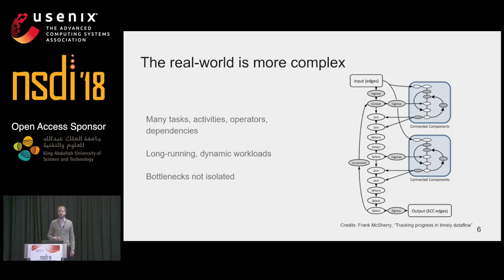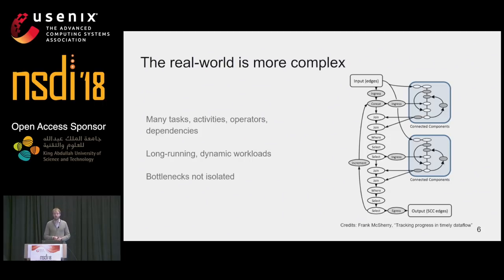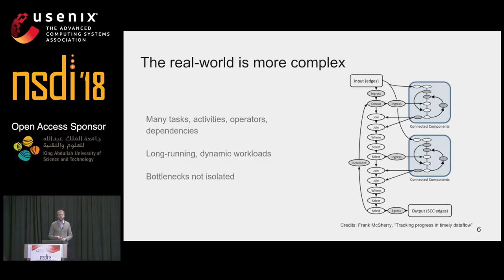The two examples I presented were rather simple, but the real world is more complex. On the right-hand side you can see a visualization of a data flow that computes strongly connected components in a graph, implemented on Timely Dataflow. As you can see, it contains a lot of operators. A lot of distributed data flows consist of many tasks, activities, and operators which have mutual dependencies. The workload can be dynamic, and the jobs tend to be long-running — they can run for months or weeks. All of this means that bottlenecks are hard to identify, and they usually don't occur isolated on a single operator. They might span multiple operators and different workers, which makes it even harder to debug.